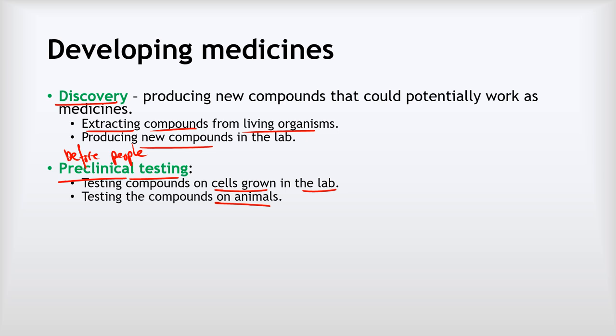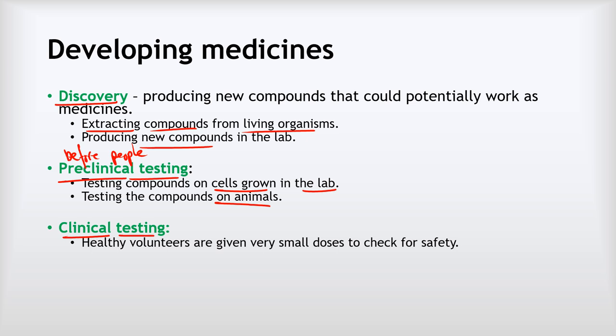If the new potential medicine passes both preclinical stages, it moves on to clinical testing — where we start giving the potential medicine to real people. It's given by doctors and those people are very closely monitored to check for safety and whether it works. Stage one of clinical testing is essentially a safety check where healthy volunteers are given very, very small doses, and their health is closely watched to check for any potential harmful effects.